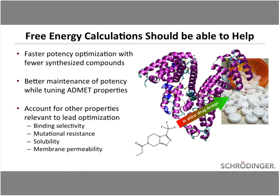Our belief is that free energy calculations should be able to help. These calculations promise faster potency optimization with fewer synthesized compounds, as well as better maintenance of potency while tuning ADMET properties. We're particularly excited that these calculations can also be used to account for other properties relevant to lead optimization, including direct calculation of binding selectivity, mutational resistance, solubility, and even membrane permeability.